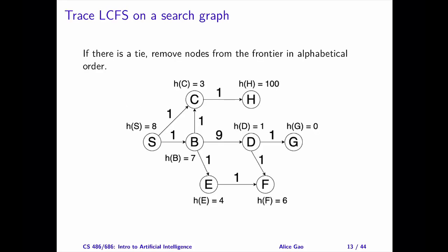Let's trace lowest cost first search on a search graph. We'll break tie as follows. If multiple paths have the same cost, we will order the path by the last node and choose the one that comes first in alphabetical order. Pause the video and trace the algorithm yourself. Then, keep watching for the answer.